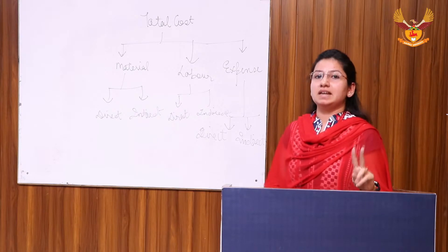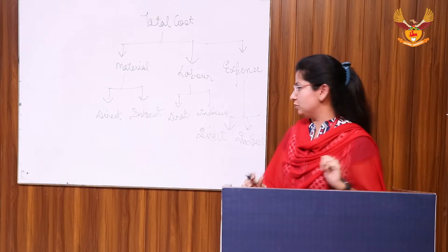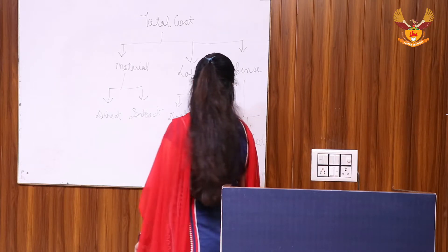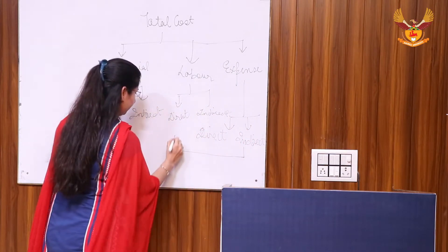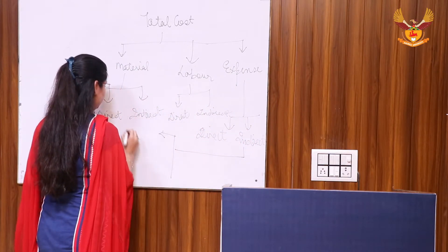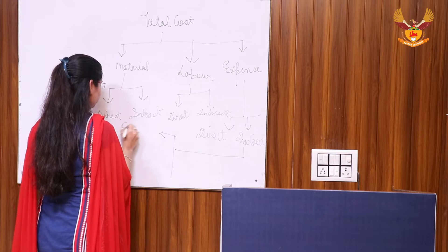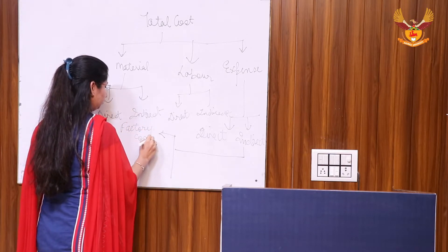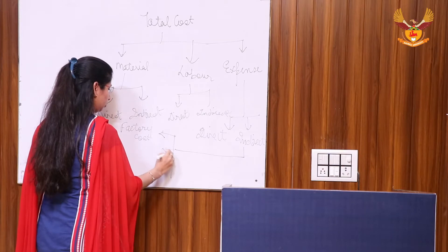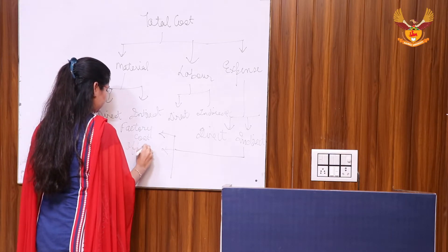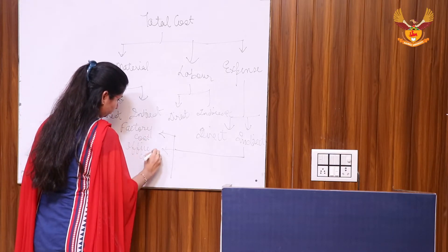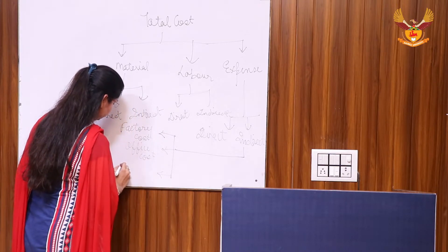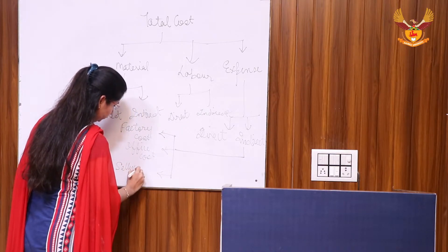Indirect expenses are related to factory, sales and distribution, and office and administration. Indirect expenses are further divided into three parts: the first is factory cost, the second is office cost, and the last one is selling and distribution cost.